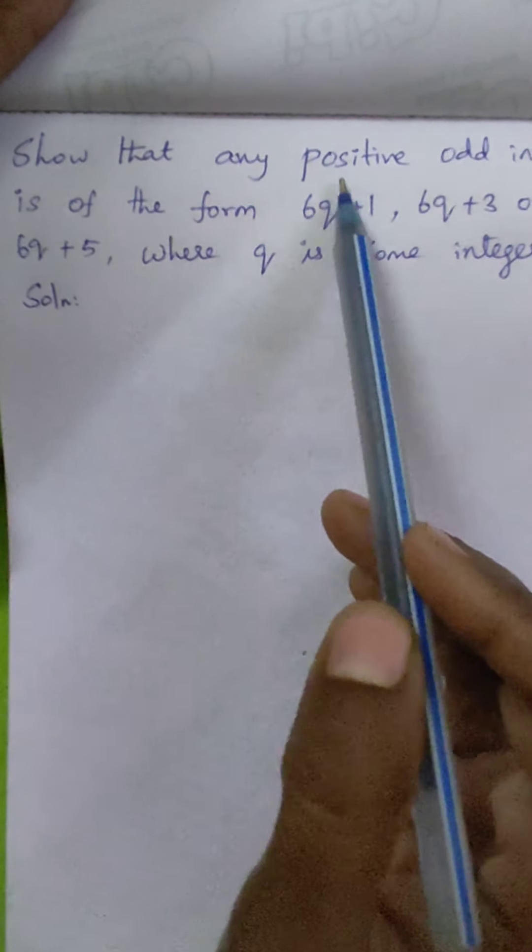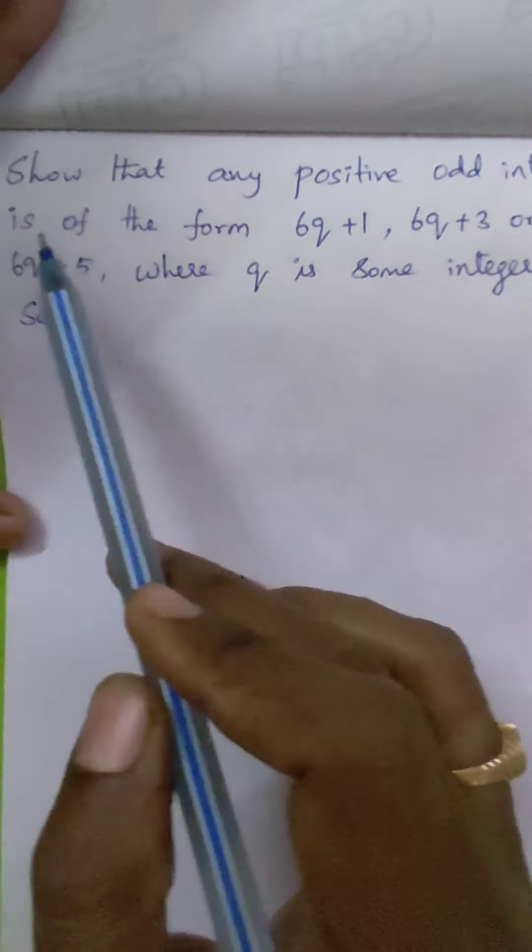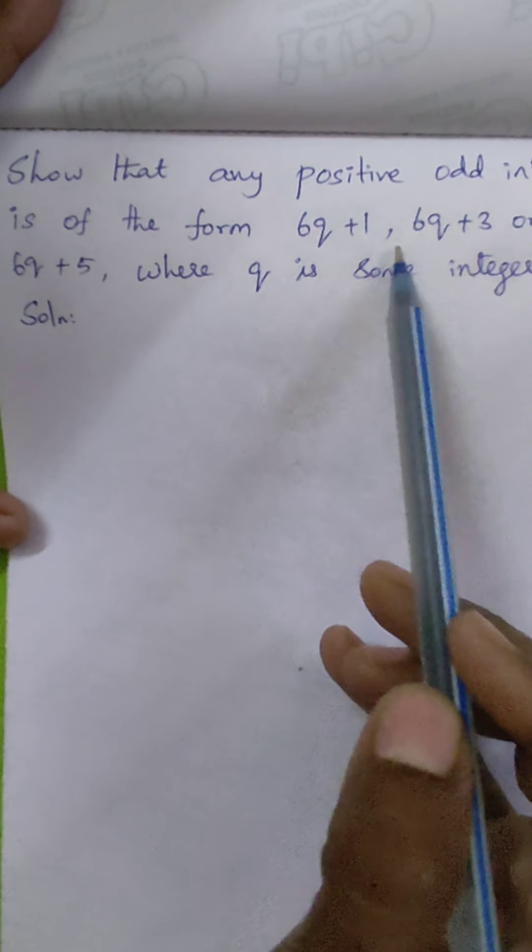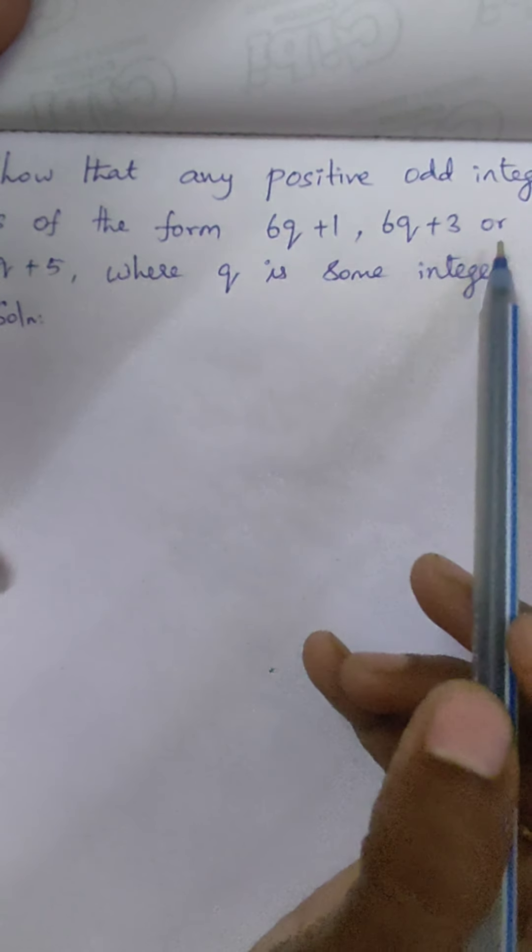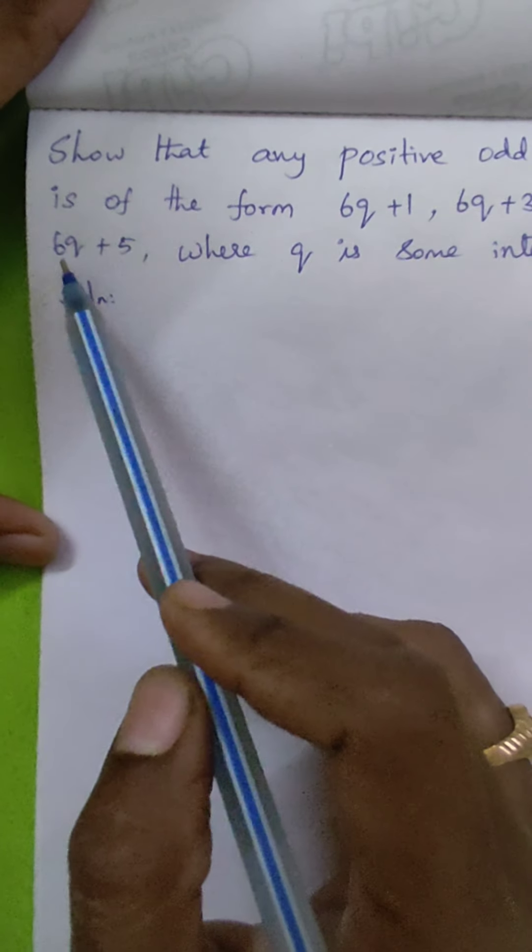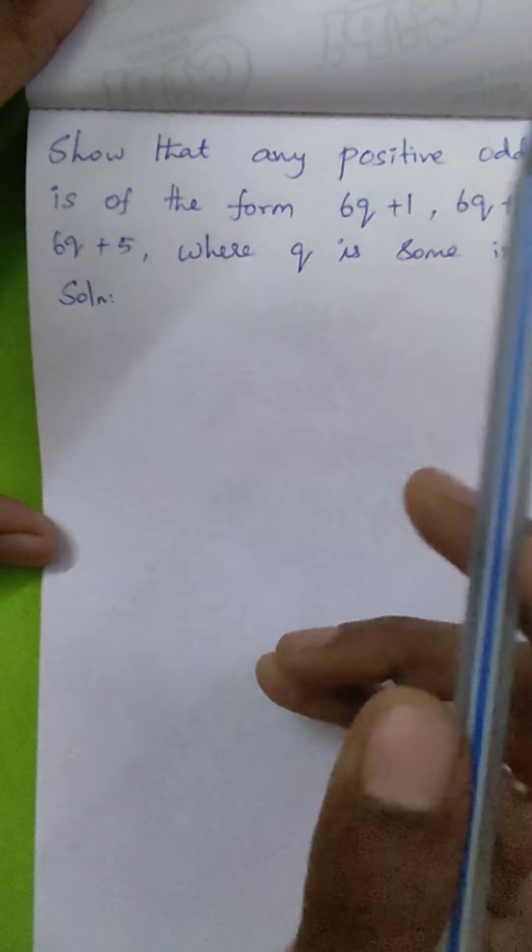Show that any positive odd integer is of the form 6q plus 1, 6q plus 3, or 6q plus 5, where q is some integer.